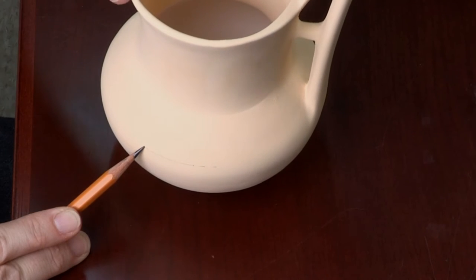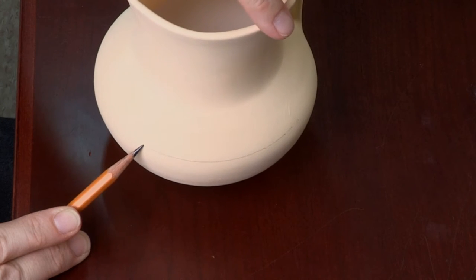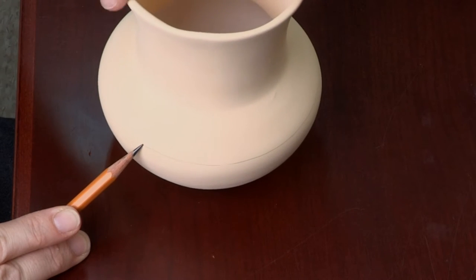You can draw a straight line by holding your pencil against the table and placing the point on the replica. Slowly turn the replica as shown here.